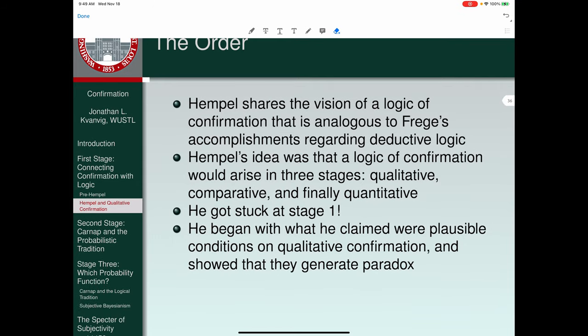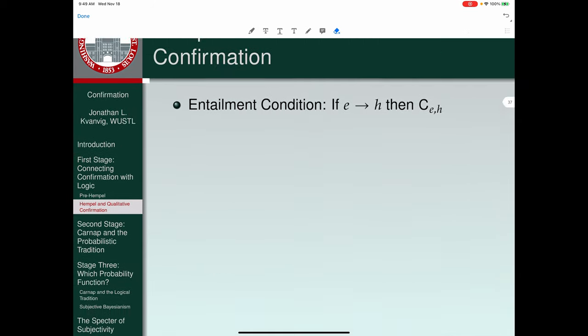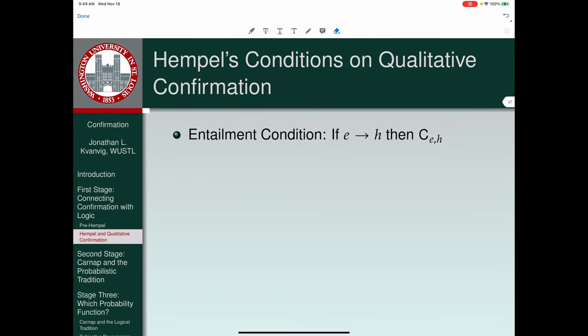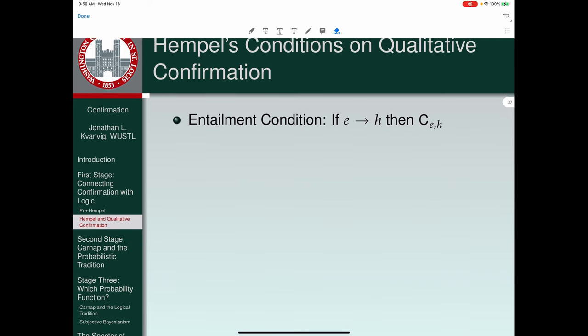This is one of the most important episodes in the history of confirmation theory in the 20th century. What happened at stage one in Hempel's account of how to get a qualitative notion of confirmation? He began with what he claimed were plausible conditions on qualitative confirmation and showed that they generate a paradox. The first one was the entailment condition. Now, this isn't A.J. Ayer's entailment condition. This is a different one. This says, if E entails H, then E confirms H. Perhaps you want to say, as I would want to say, look, that understates things. If E entails H, then E provides the maximal amount of confirmation anything could provide for H. I mean, entailment is the best thing there could ever be in terms of having evidence. In any case, that's the first of his three conditions, entailment condition.